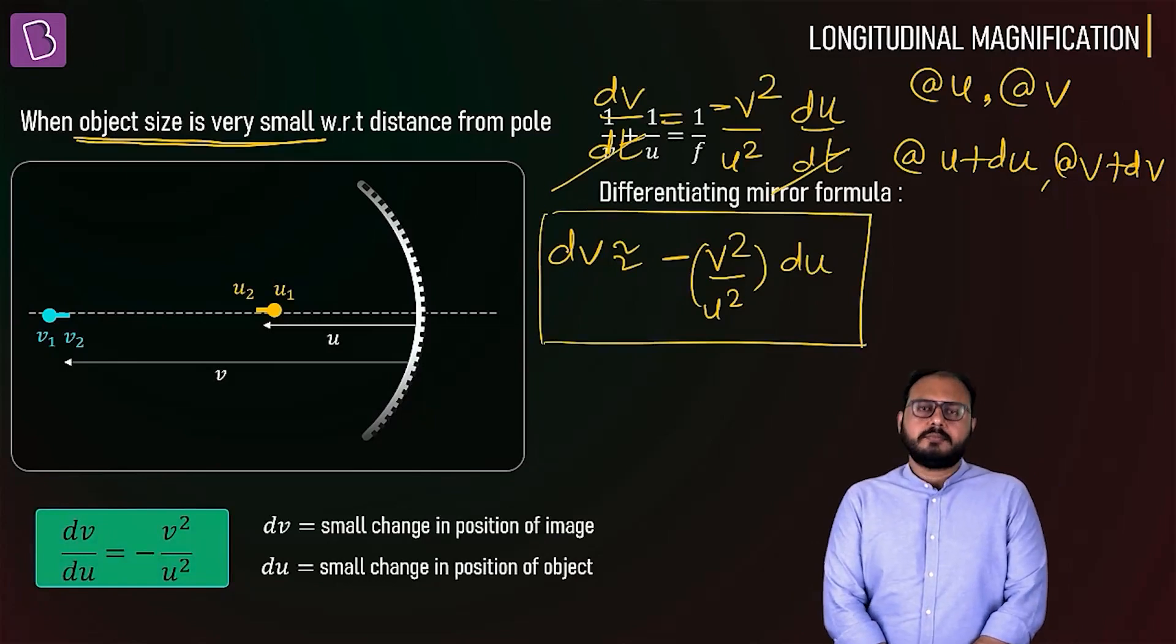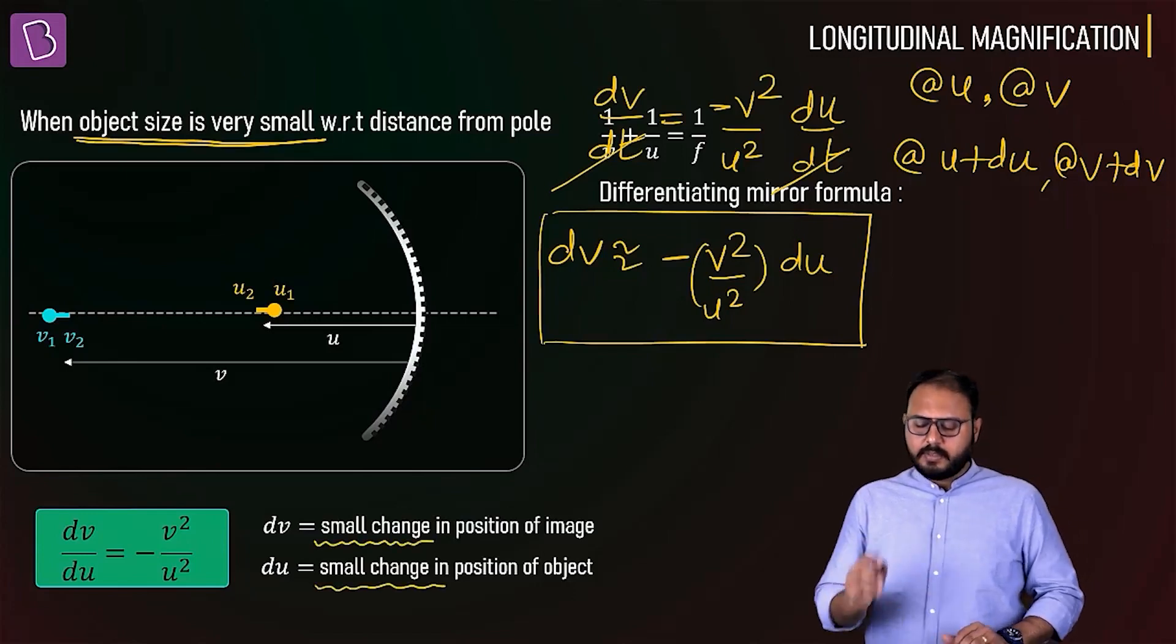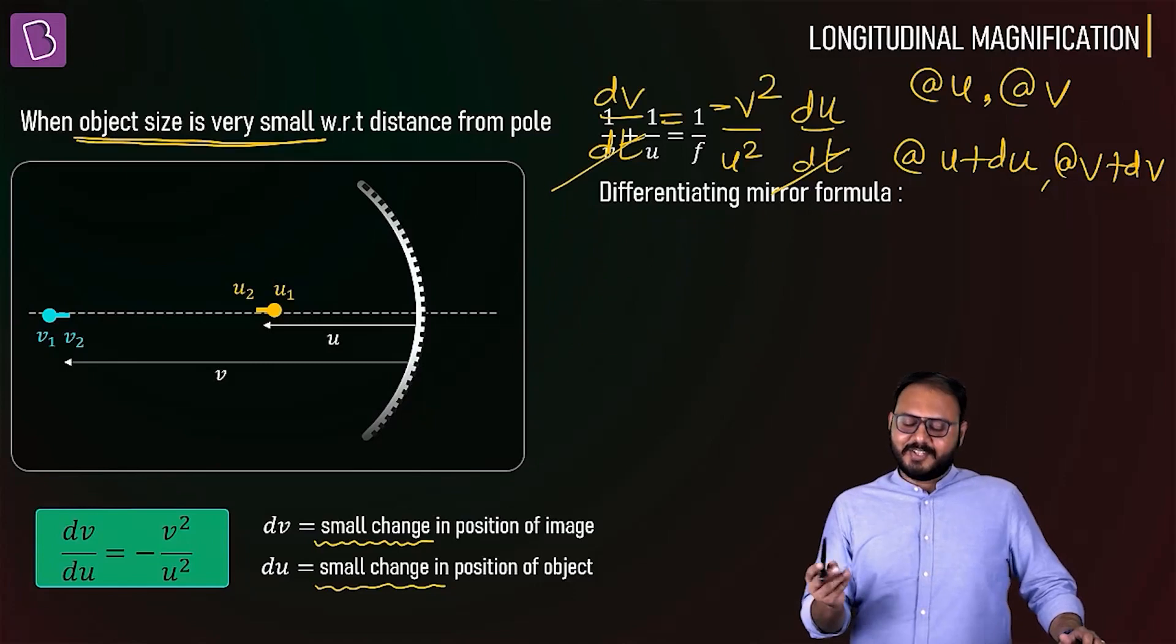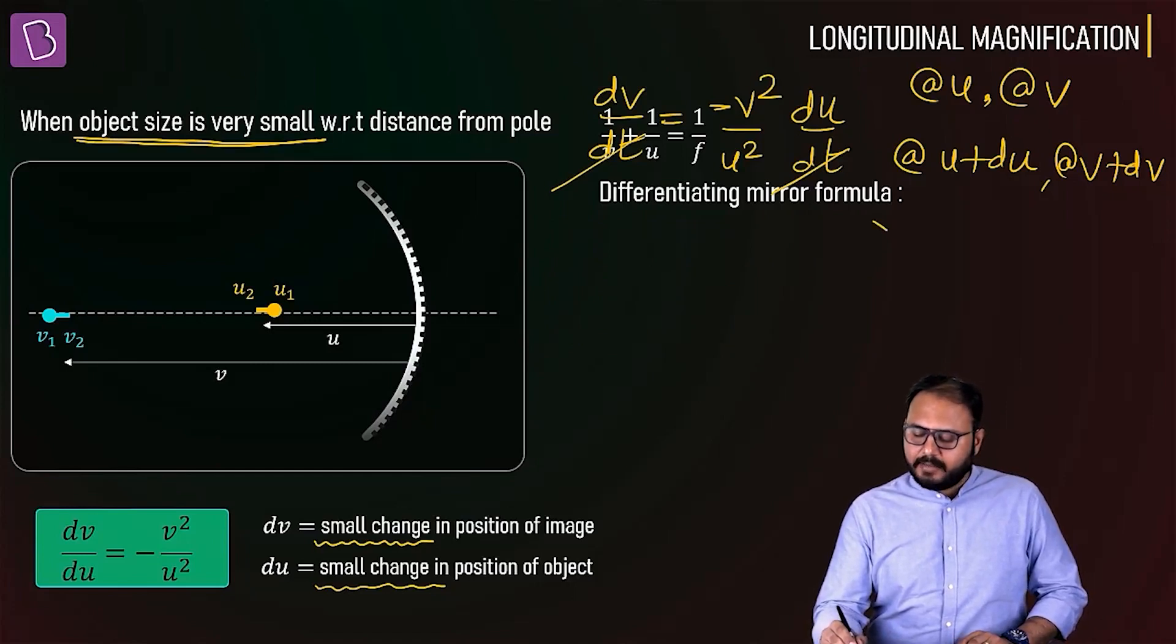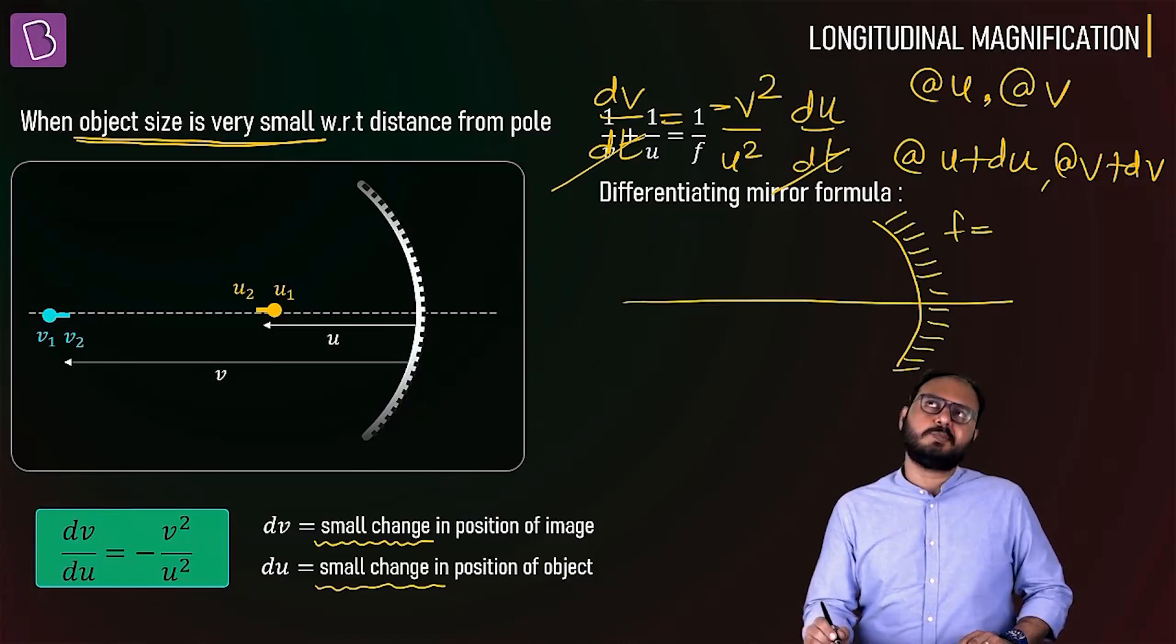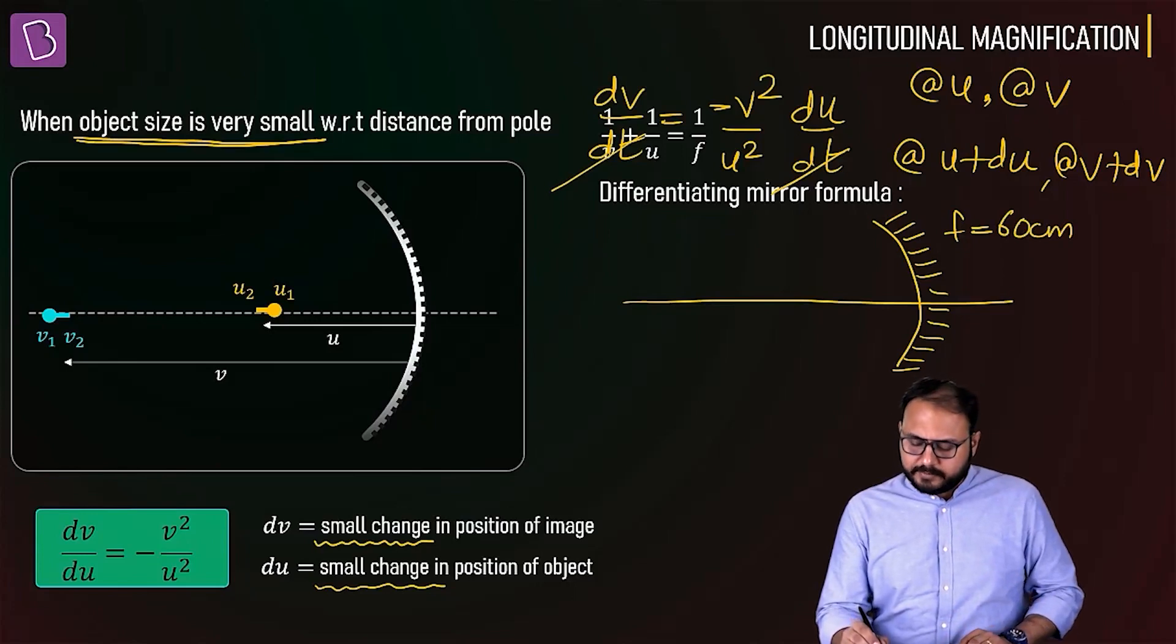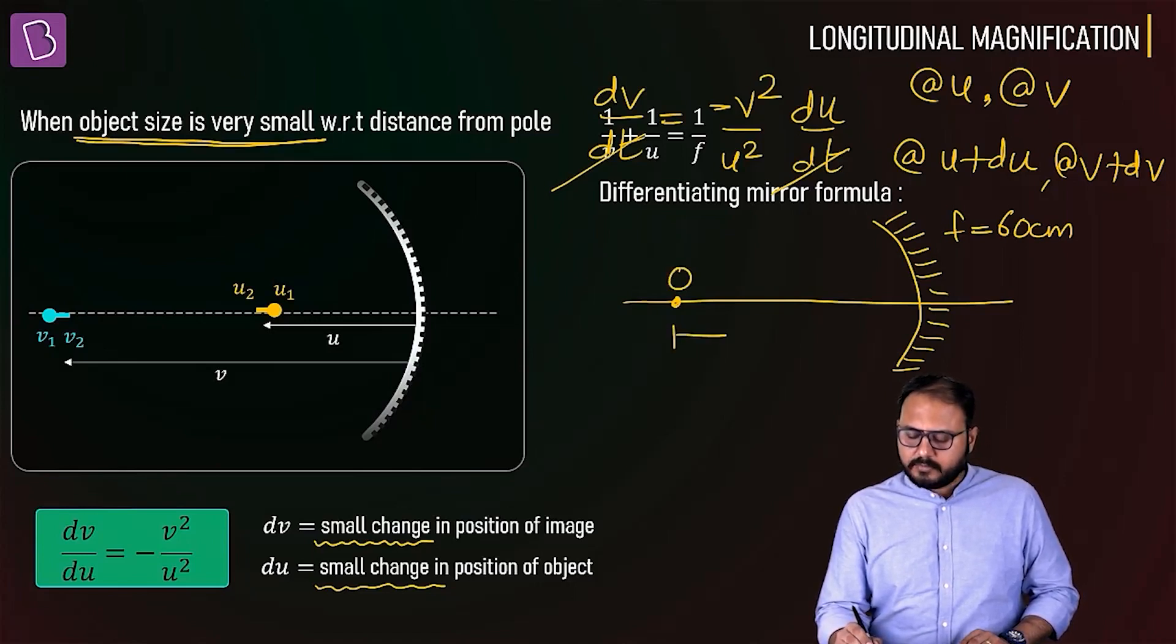The keyword is 'very small'. But there is a problem. Let me show you the problem. Let's say f is 60 centimeters. The object is at 59.9 centimeters. What if the object walks 2mm to the left?